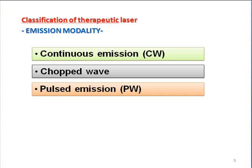This wavelength between 600 and 1200 is known as the therapeutic window. In this therapeutic window you're going to get effects of photochemical interaction, photo-thermal interaction, and photo-mechanical interaction in the tissues. Lasers are classified by their emission modality — they can be continuous emission or CW, a chopped wave, or a pulsed emission.